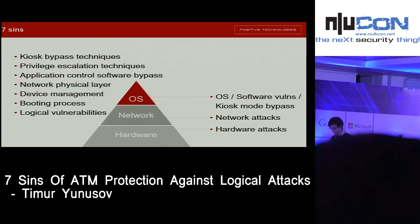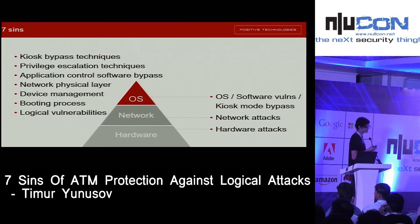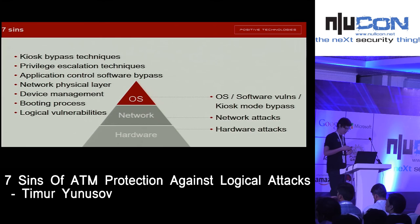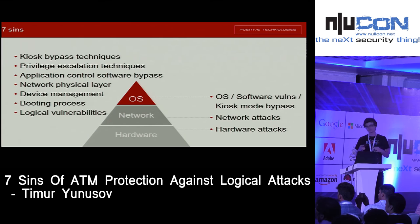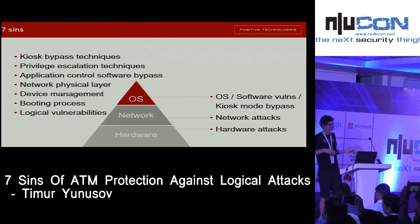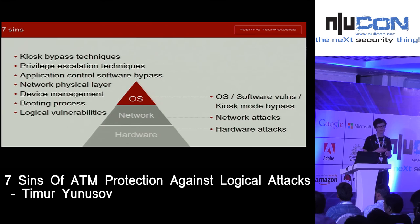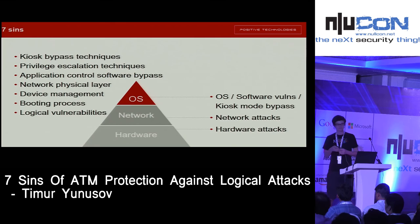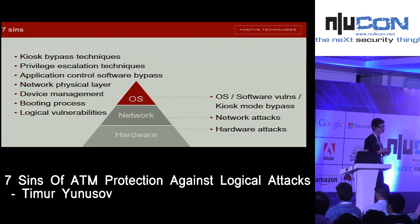Here is our seven sins list, and these are not paperwork — these are real, worked attacks that we realized over the last year on different ATMs. We split all these attacks into three levels: operating system level vulnerabilities; other software vulnerabilities like kiosk mode bypass; network attacks; and finally hardware attacks — not only black box, but things like hard drive encryption vulnerabilities, BIOS passwords, and so on.